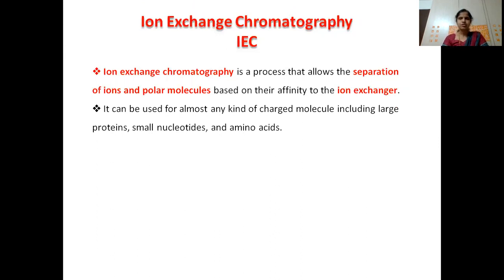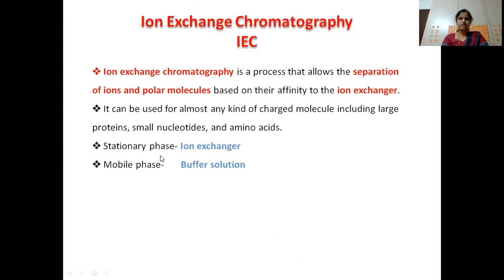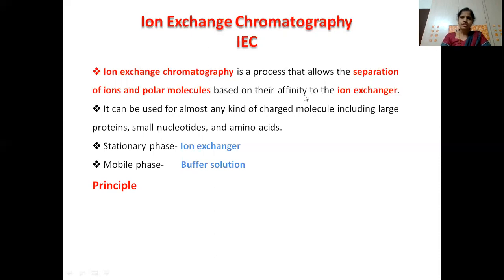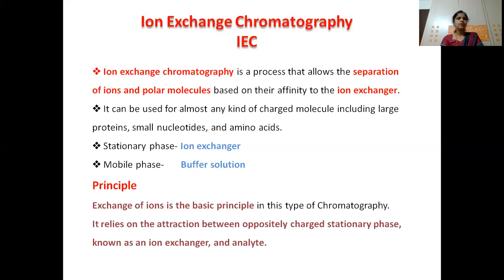These are biological fluids present in the body which can be easily separated by ion exchange chromatography because they are charged compounds. The ion exchanger is used as the stationary phase, and the mobile phase is a buffer solution, which may be acidic or basic — we can change the pH of this buffer solution. The principle is mainly based on the affinity between the ion exchanger and the sample; the exchange of ions between the charged stationary phase and the analyte (the sample) is the basic principle.